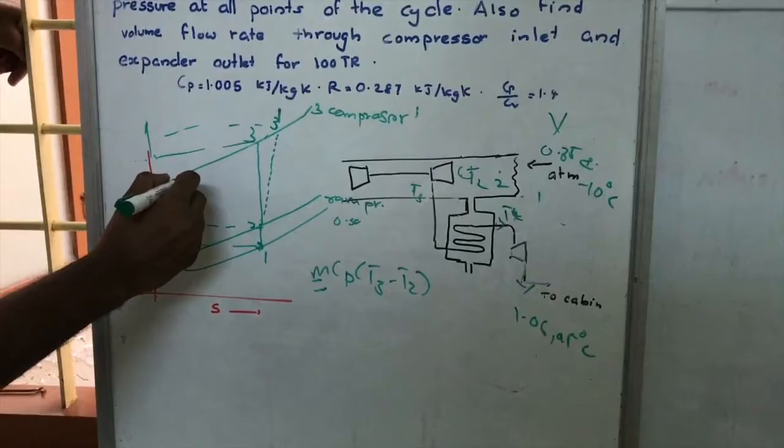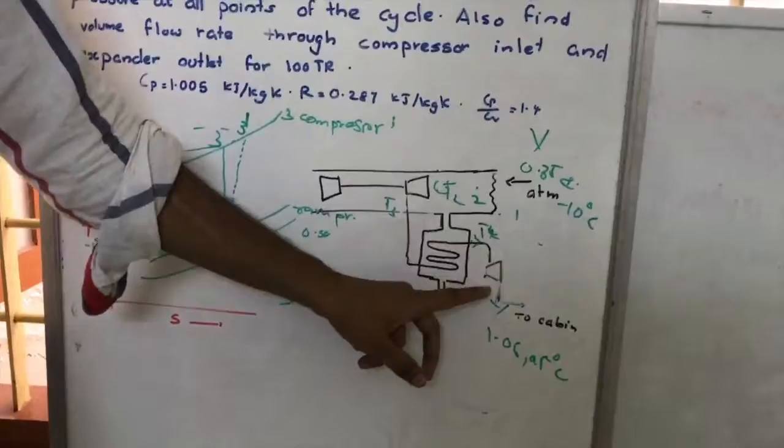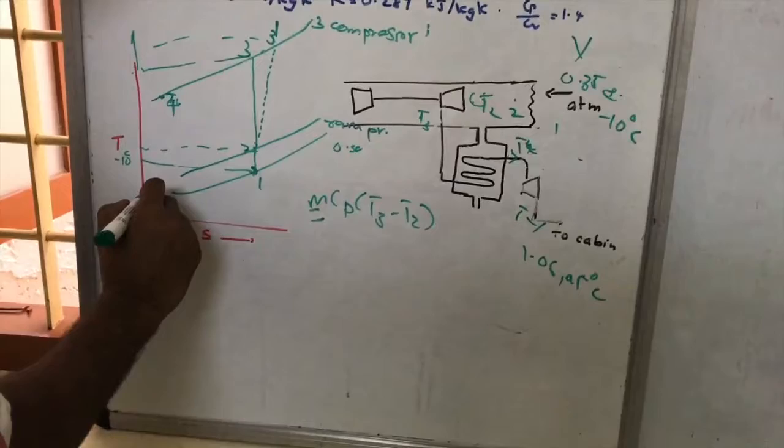Point 4 is at a temperature T4, which is greater than T2. After the heat exchanger, the air passes through the expander. The pressure ratio of the expander is 4.5.